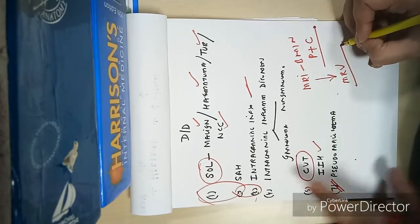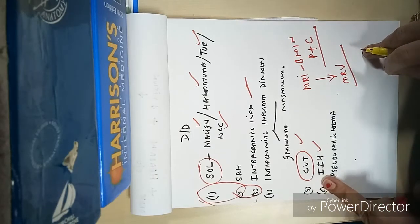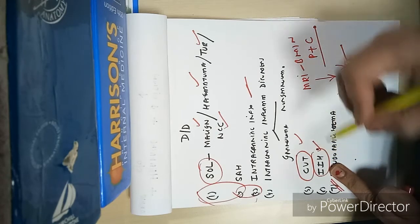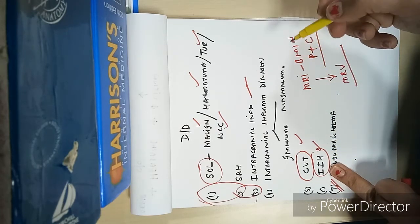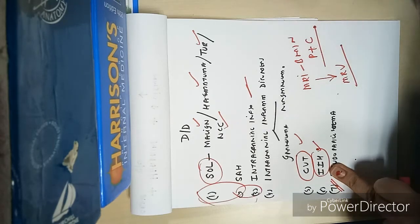Then some signs of idiopathic intracranial hypertension can be seen on MRI brain, like tortuosity of optic nerves, flattening of sclera, and the empty sella sign. So some clue about IIH we can get on MRI brain.